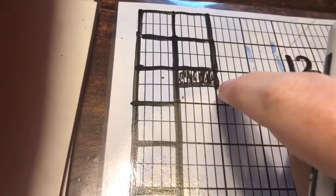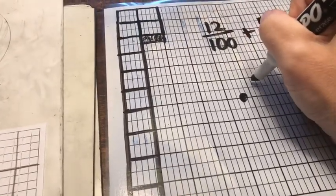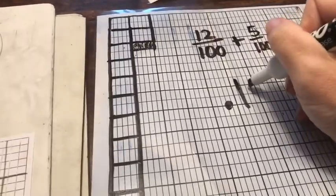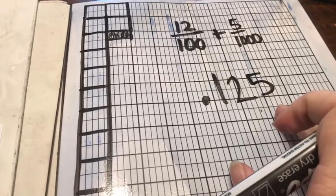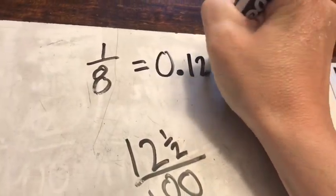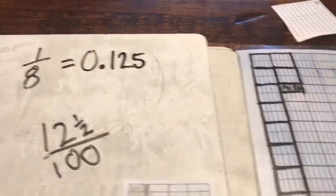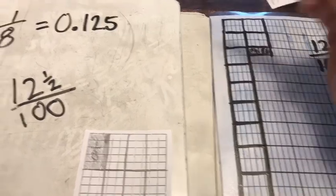So I don't just have twelve hundredths — I have twelve hundredths and five thousandths. Let me use that to write my decimal. Twelve hundredths: I can see one tenth there, then two hundredths left over, and then five thousandths. So this is twelve and a half hundredths, or one hundred twenty-five thousandths. One eighth as a decimal is one hundred twenty-five thousandths — 0.125.